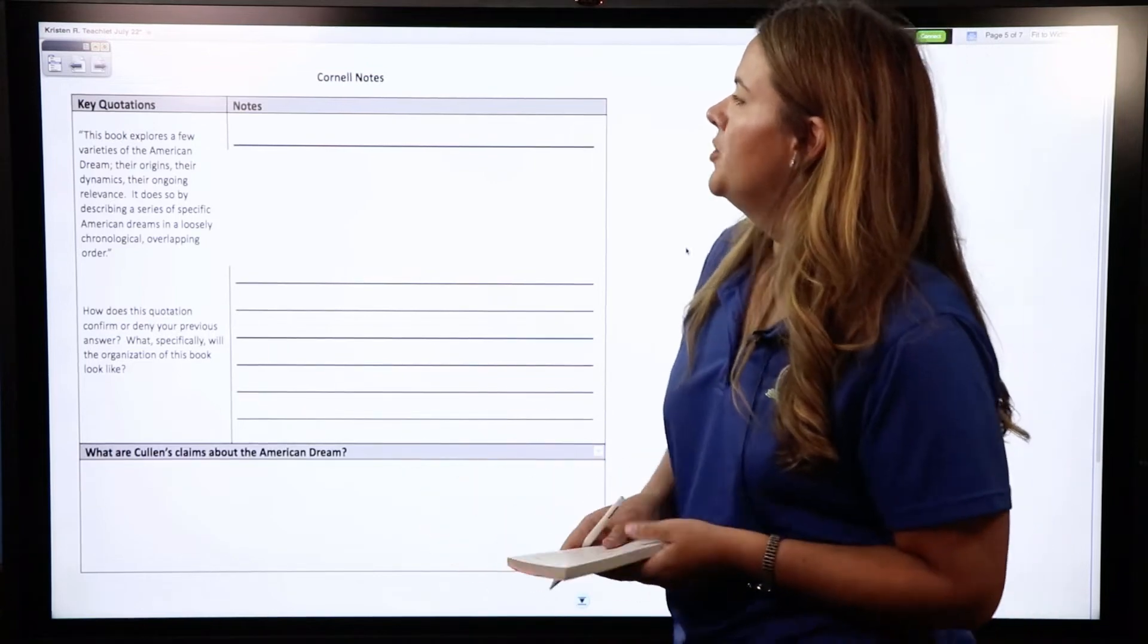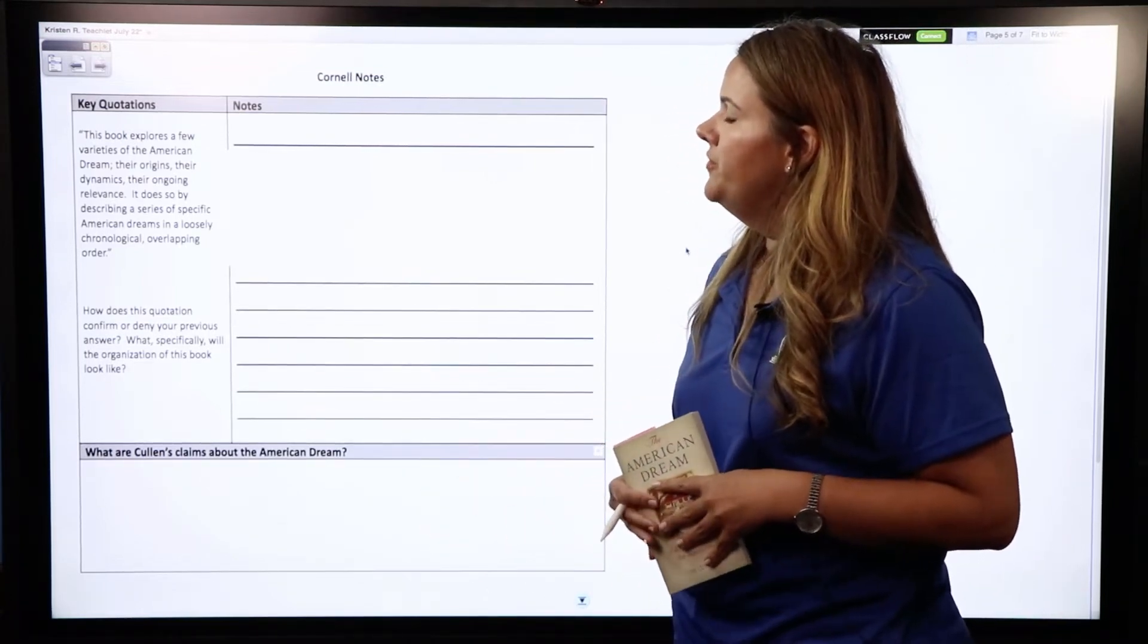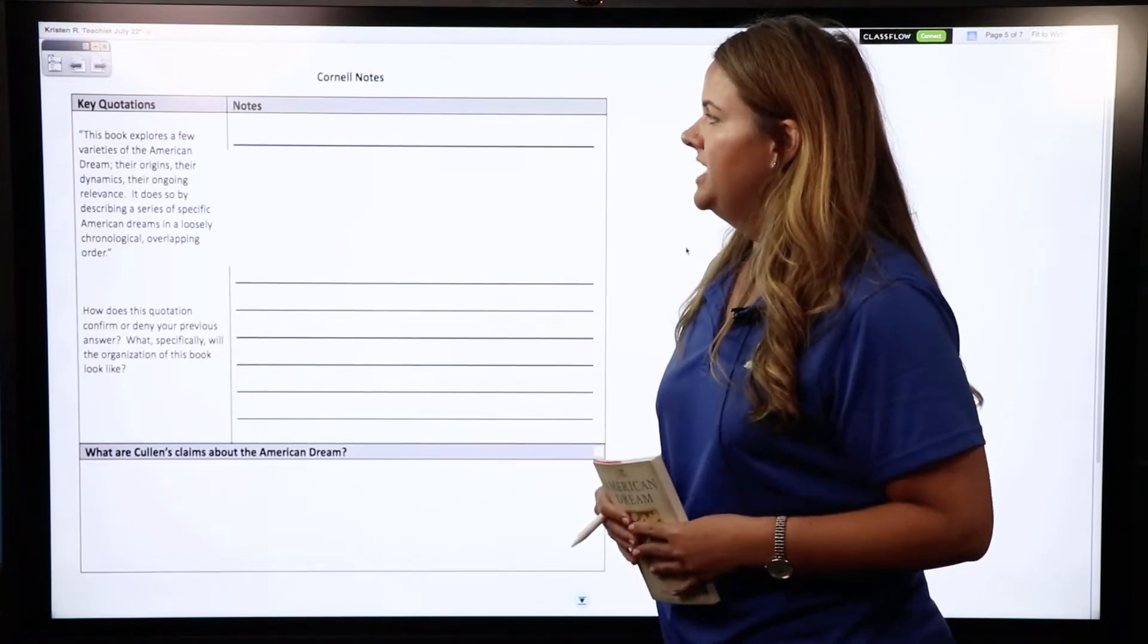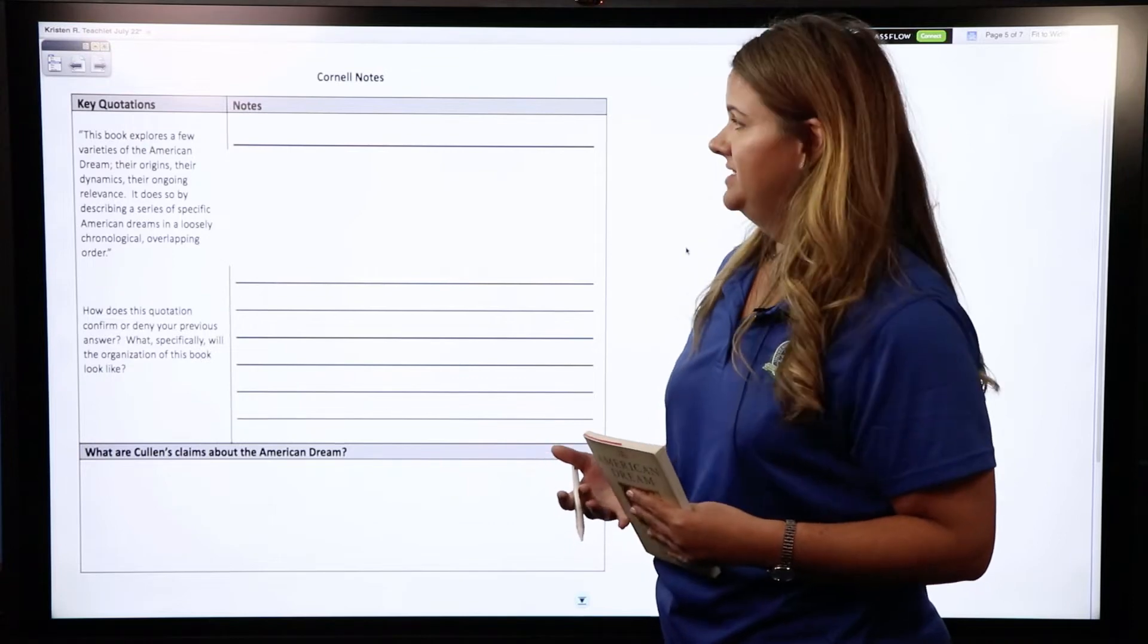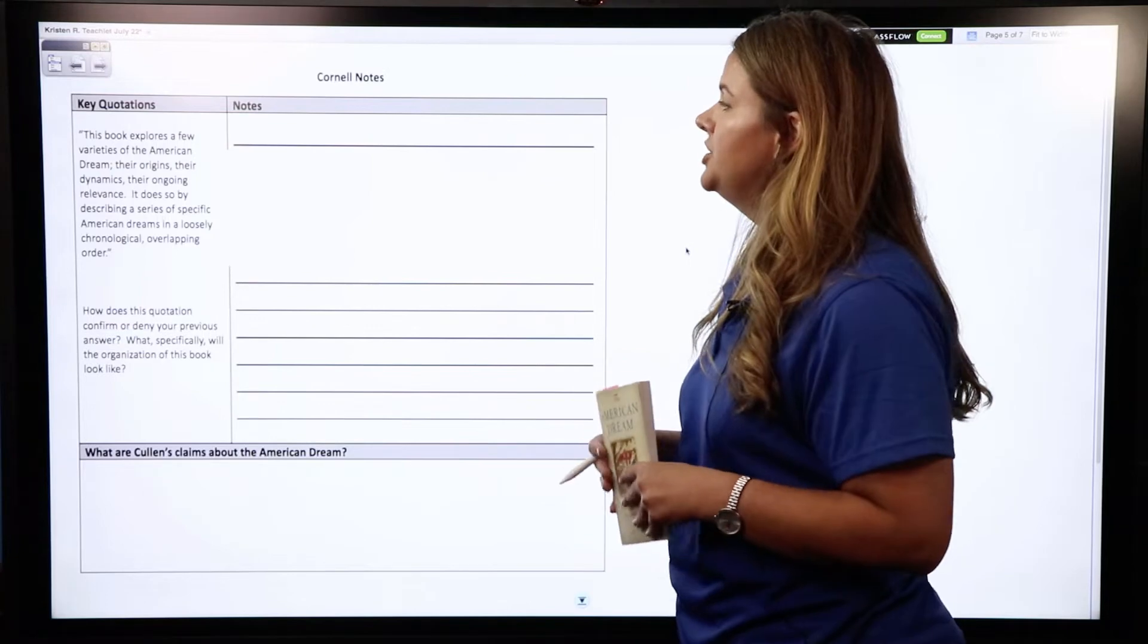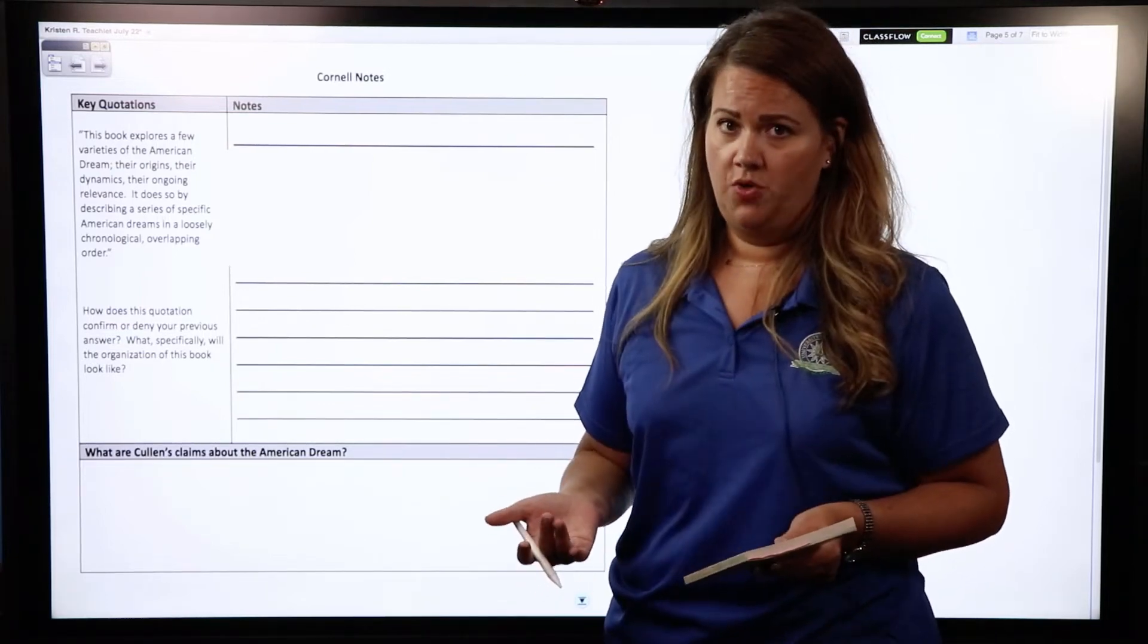So the quote that we're given states: this book explores a few varieties of the American dream, their origins, their dynamics, their ongoing relevance. It does so by describing a series of specific American dreams in a loosely chronological overlapping order.